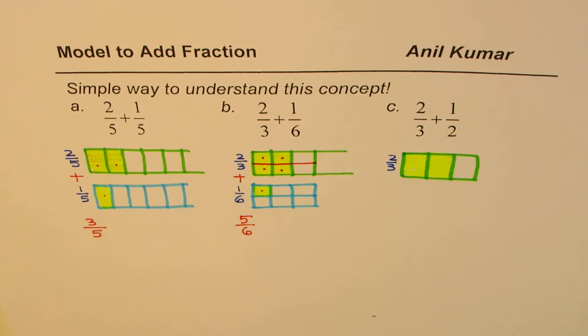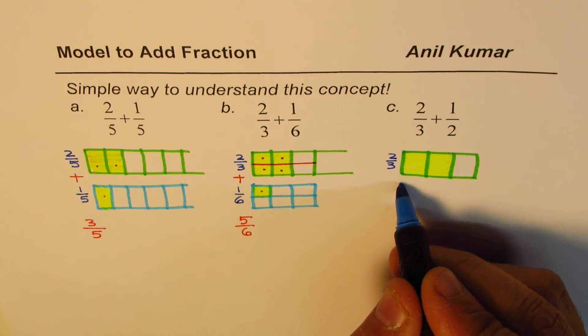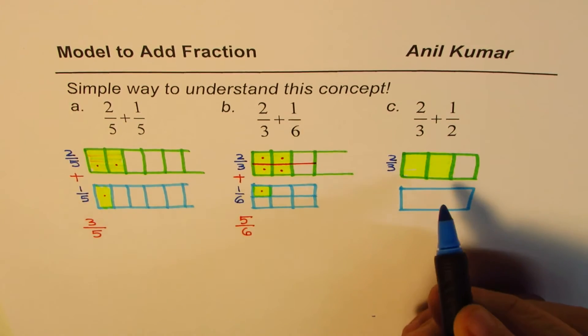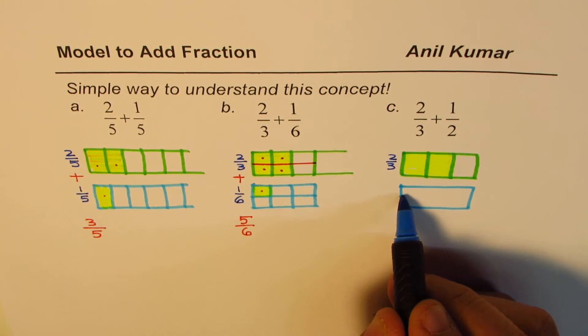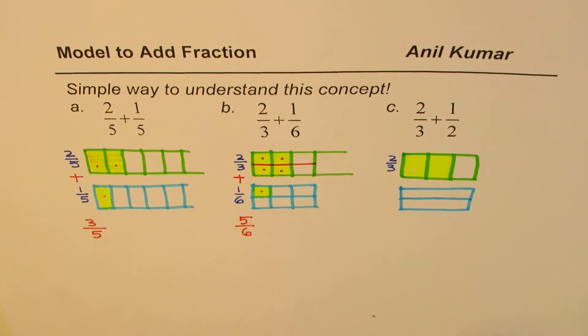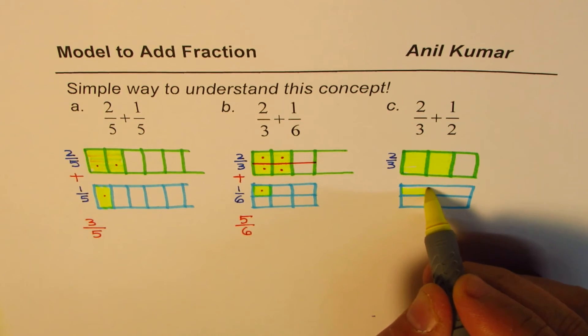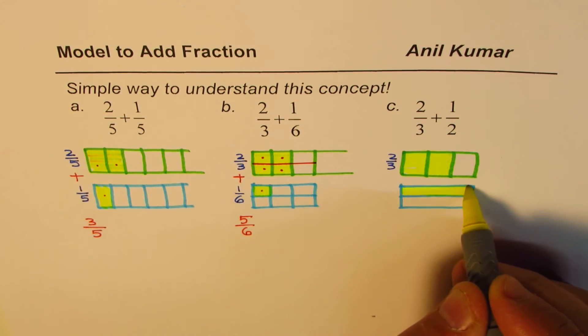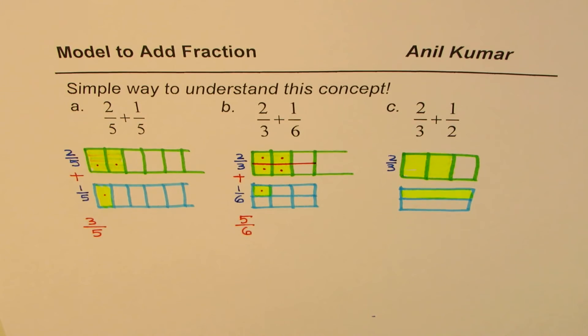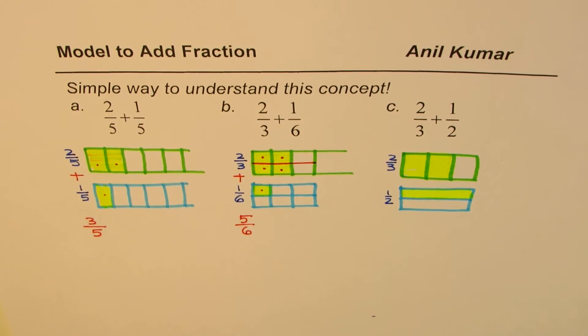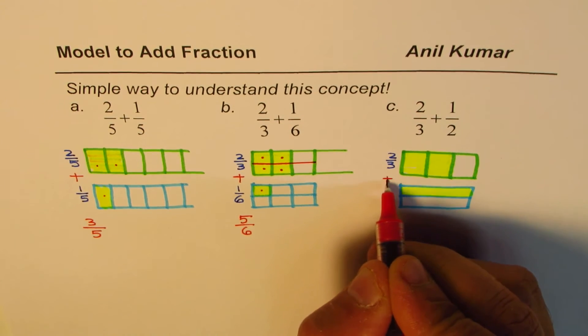Now we have to add half. So let me make another rectangle. Same size. Size is important. Half. Let me cut it like this. Do you see this? This is a half. And let me select one half of it. That is the half. So I have to add 2 out of 3 and half to find my answer. How do I add this?